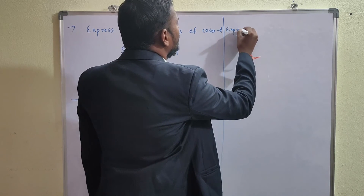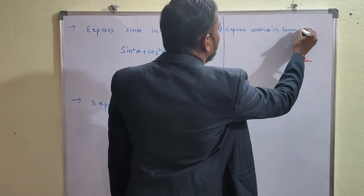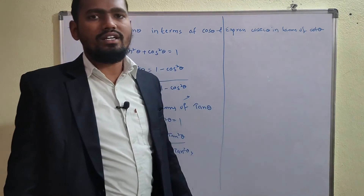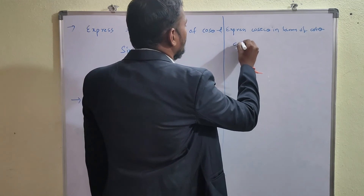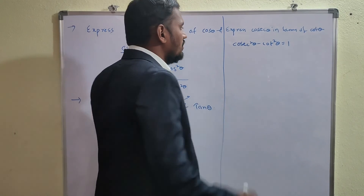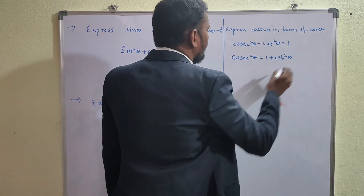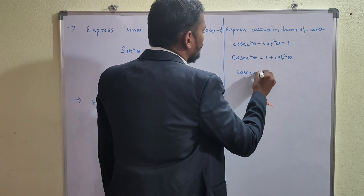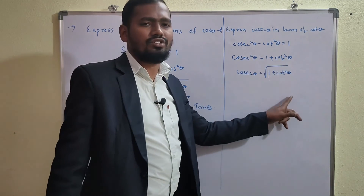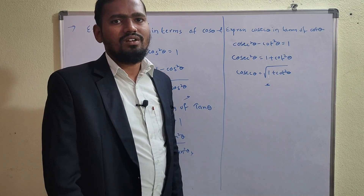Problem 3: Express cosec θ in terms of cot θ. The relevant identity is cosec²θ - cot²θ = 1, so cosec²θ = 1 + cot²θ. Taking the square root: cosec θ = √(1 + cot²θ). This is the answer. Please do subscribe. Thank you.